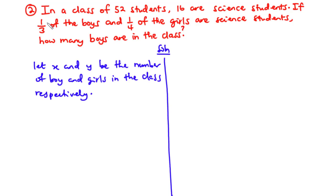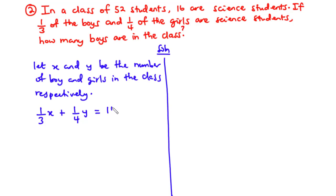From the second statement, one third of the boys and one fourth of the girls are science students, and the number of science students is 16. So (1/3)x plus (1/4)y equals 16 — this is equation one. We also know that the total number of boys plus girls equals 52, so x plus y equals 52 — let's call this equation two.